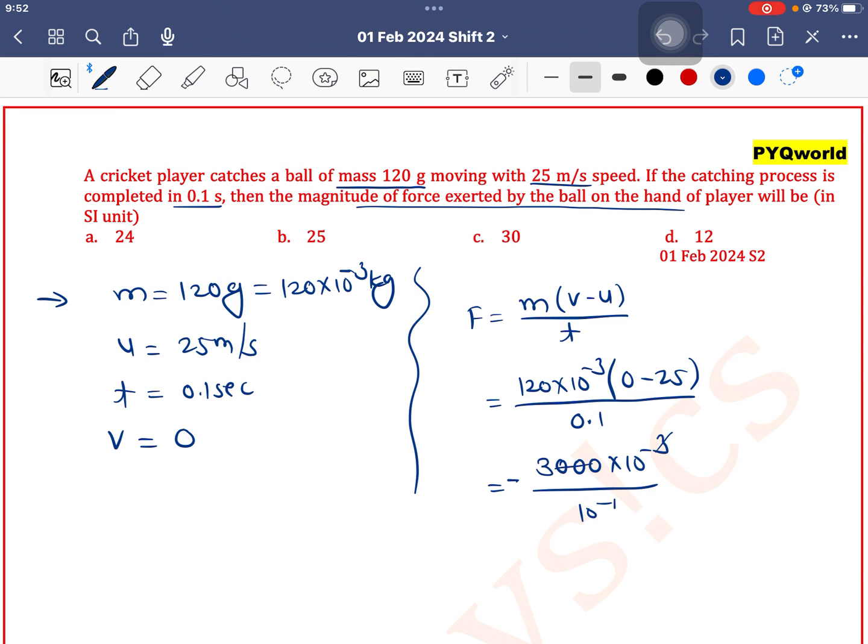So these three zeros can get cancelled out, which is equal to minus 30 newton. So option C is the correct one.